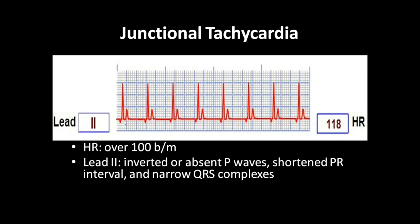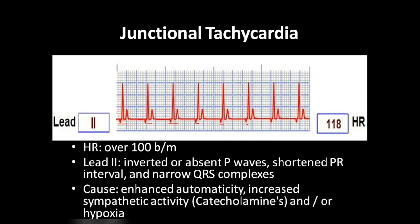In lead II, inverted or absent P waves can be seen. The heart rate will be more than 100 beats per minute, and the P waves are inverted or may be absent. The PR interval is shortened — less than 0.12 seconds — and the QRS complexes are always narrow.